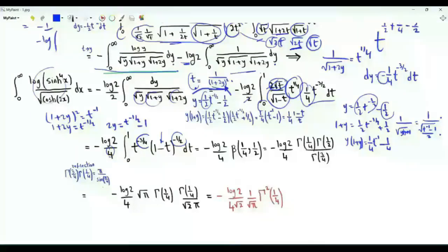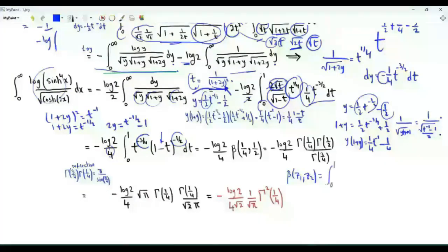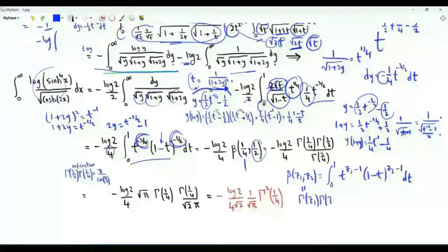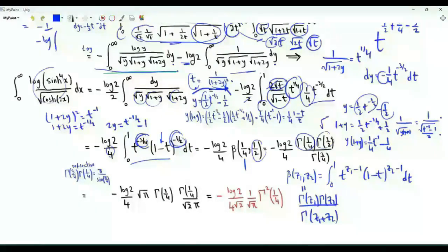When z₁ and z₂ have real parts strictly greater than 0, the beta function beta(z₁, z₂) equals the integral from 0 to 1 of t to the (z₁ minus 1) times (1 minus t) to the (z₂ minus 1) dt. This integral is therefore beta(1/4, 1/2), since the exponent of t is minus three-fourths giving z₁ minus 1 = -3/4, so z₁ = 1/4, and the exponent of (1 minus t) is minus one-half giving z₂ = 1/2. Using beta(z₁, z₂) = Γ(z₁)·Γ(z₂) / Γ(z₁ + z₂), we get Γ(1/4)·Γ(1/2) in the numerator, where Γ(1/2) equals the square root of π, and Γ(3/4) in the denominator.